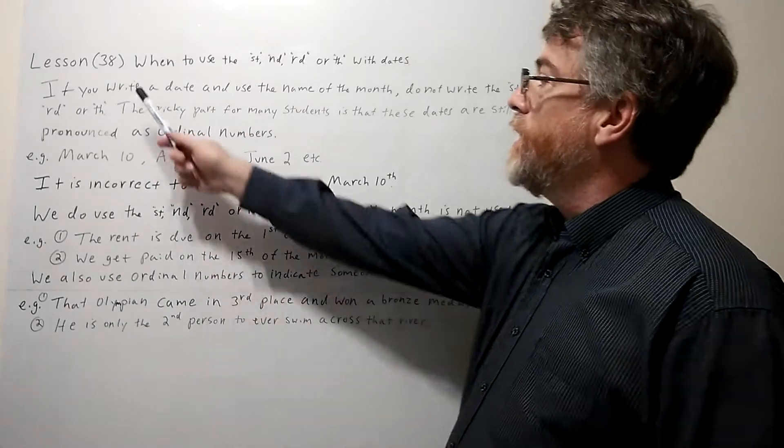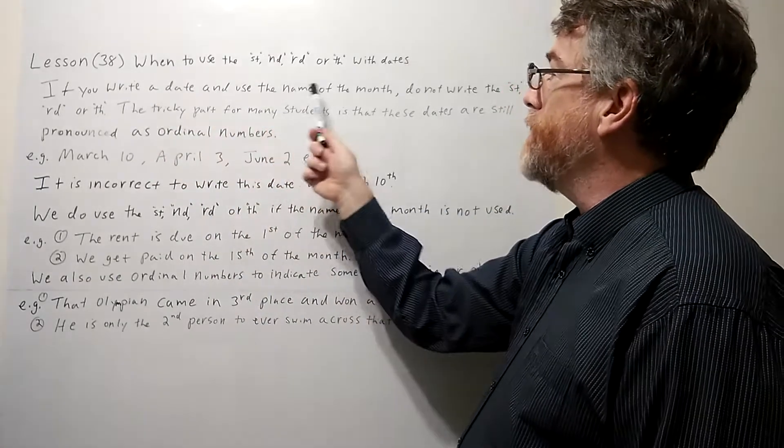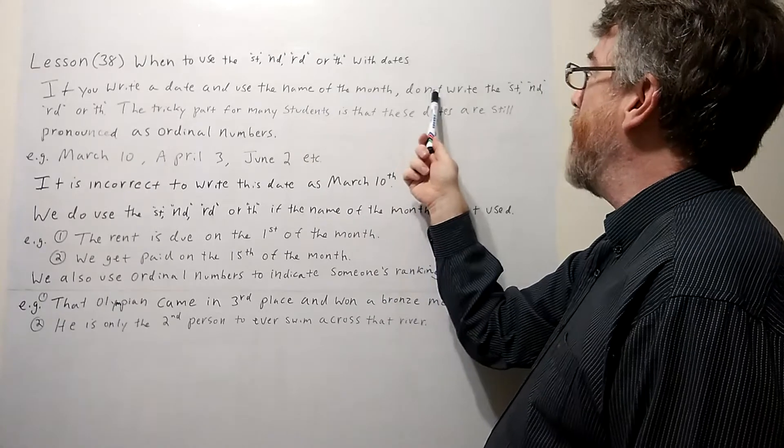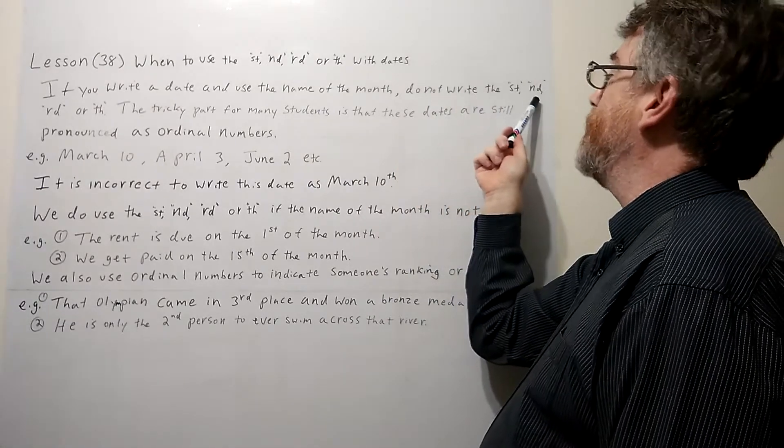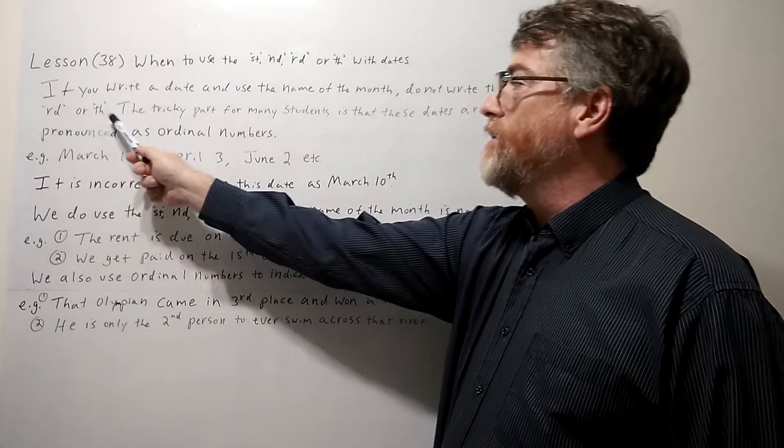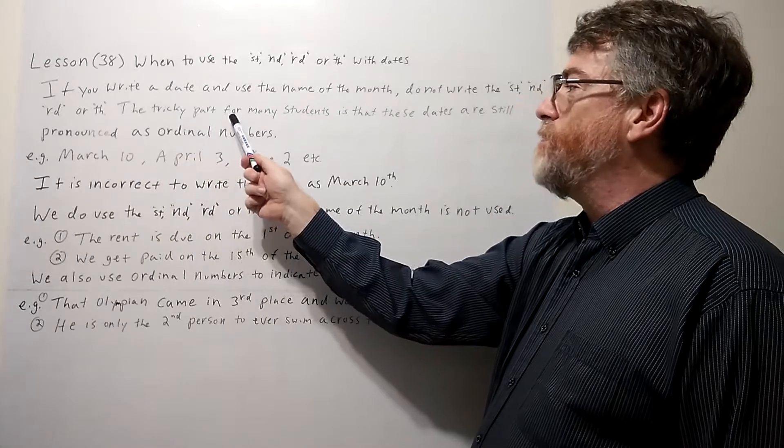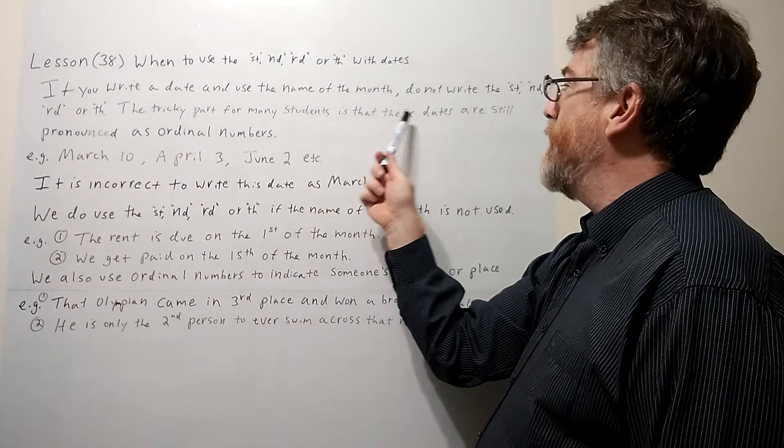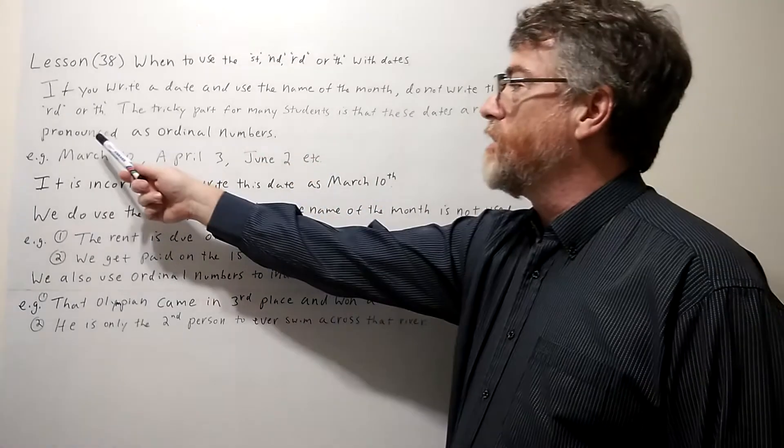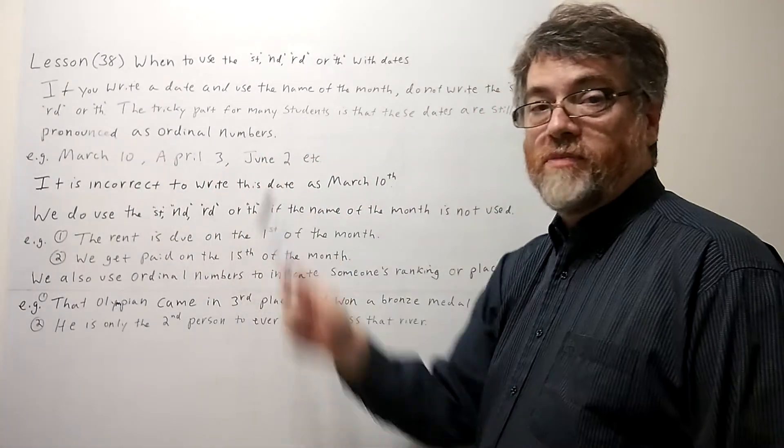Okay, here's the first note. If you write a date and use the name of the month, do not write the ST, ND, RD, or TH. The tricky part for many students is that these dates are still pronounced as ordinal numbers.